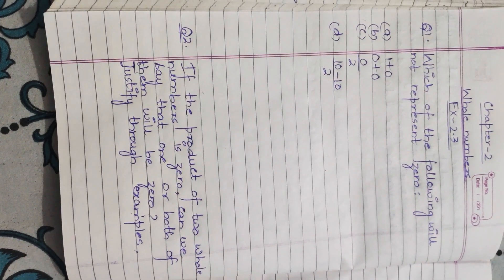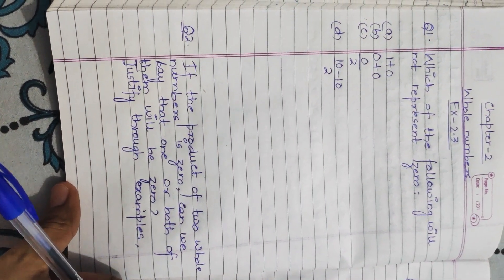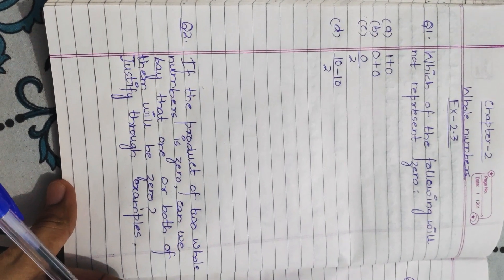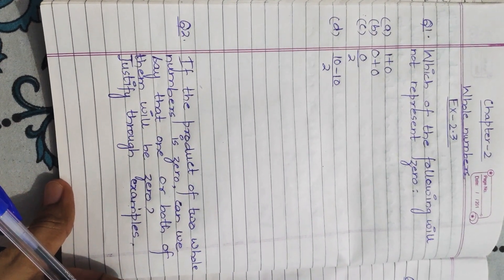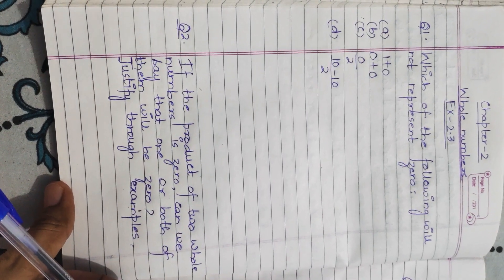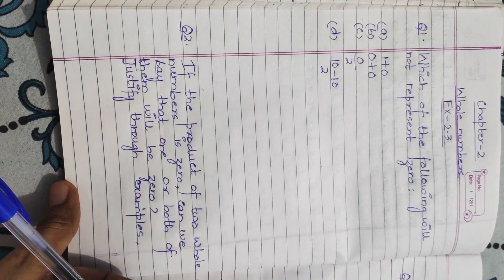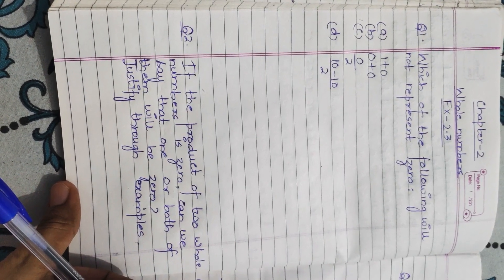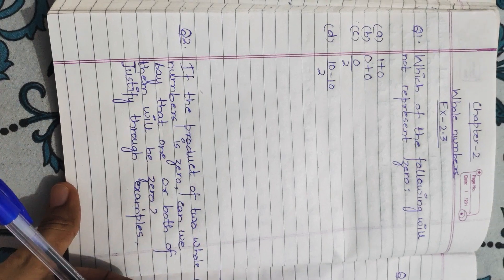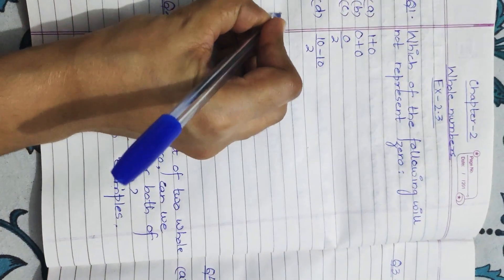Hello everyone, today we are starting with Exercise 2.3 of Chapter 2 - Whole Numbers. The first question of the exercise is: which of the following will not represent zero? In this question, they have given four parts and we have to check by solving these four parts which of them will not represent zero.